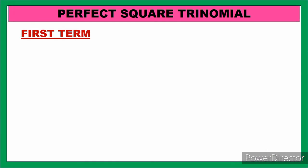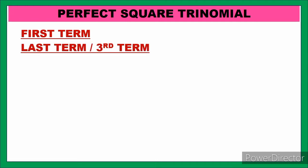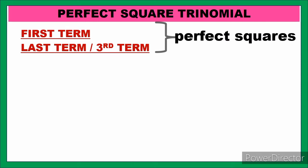How do you determine whether a given trinomial is a perfect square trinomial or not? The first term and the last term of the trinomial must each be a perfect square. The perfect squares include numbers such as 1, 4, 9, 16, 25, 64, 81, 100, 121, and so on.